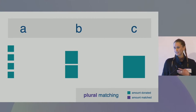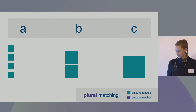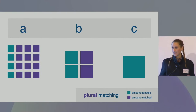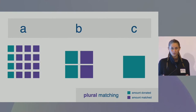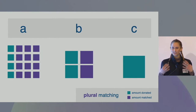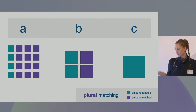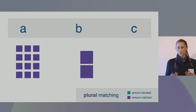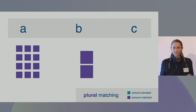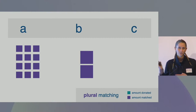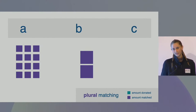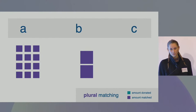What the formula says is that the total funding to each project should be the square of the sum of the square roots of the individual contributions. Again, it doesn't matter too much what the actual formula is because I think we want to think of this as a template. I really just want to stress the intuition behind this idea. What we see here, when we take away the contributions from private citizens or individuals, is this distribution of public funds.